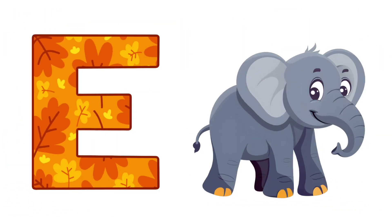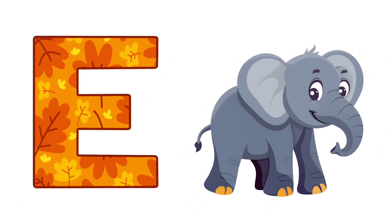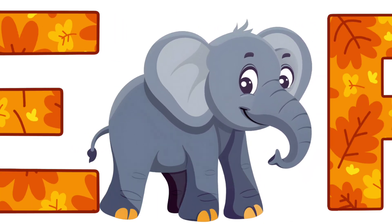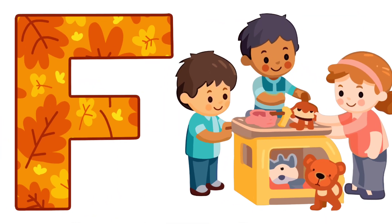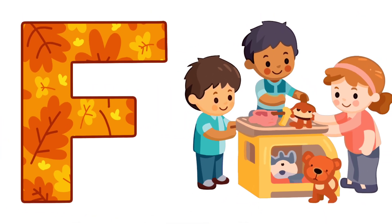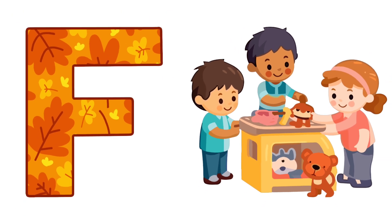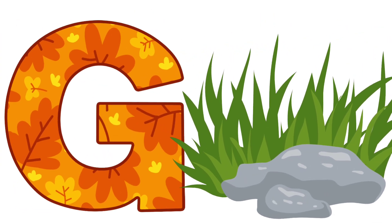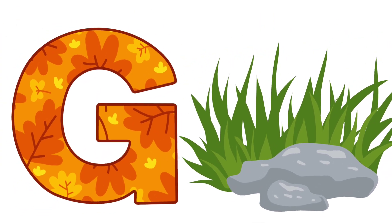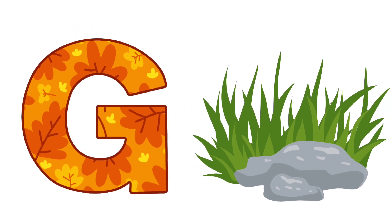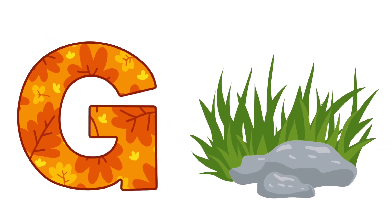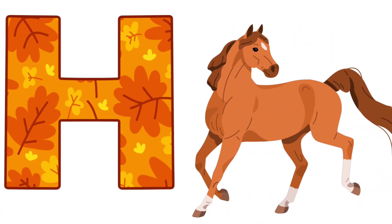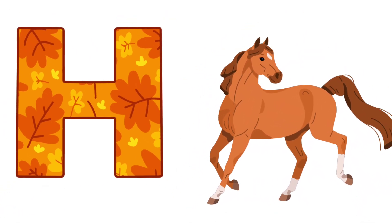E is for Elephant. F is for Friend. G is for Grass. H is for Horse.